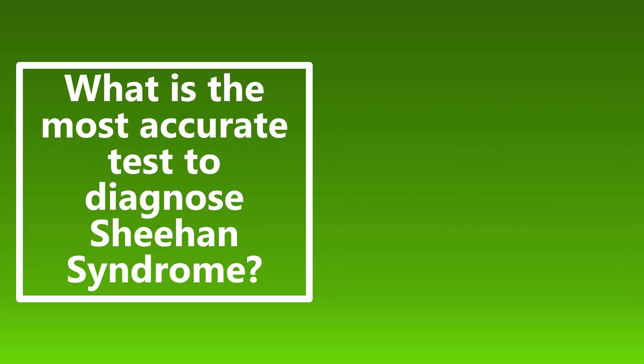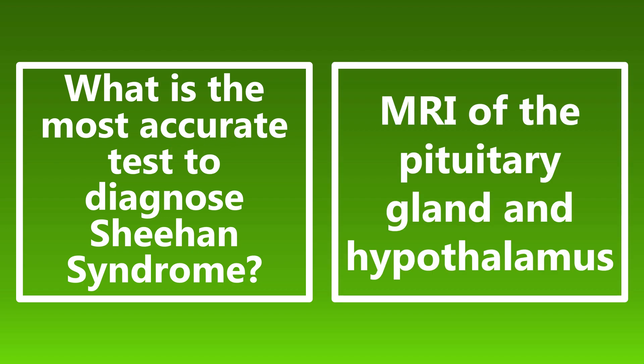What is the most accurate test to diagnose Sheehan syndrome? It's going to be an MRI of the pituitary gland and the hypothalamus. Sheehan syndrome, also known as postpartum pituitary necrosis, is ischemia and necrosis of the anterior pituitary gland. It can lead to massive obstetric hemorrhage and shock. The most accurate test is an MRI of the pituitary gland and the hypothalamus.